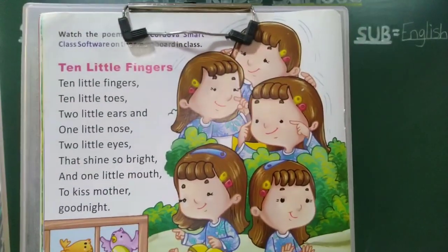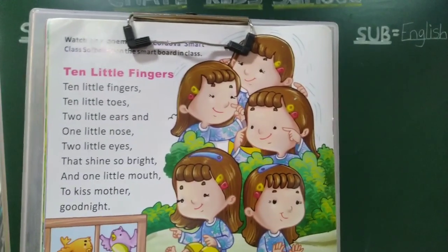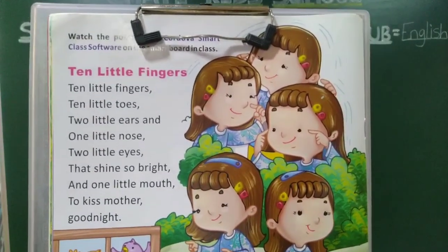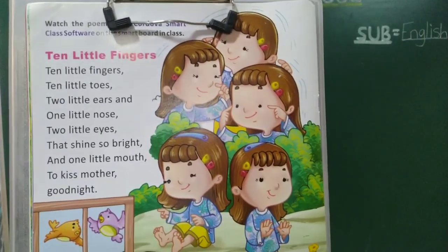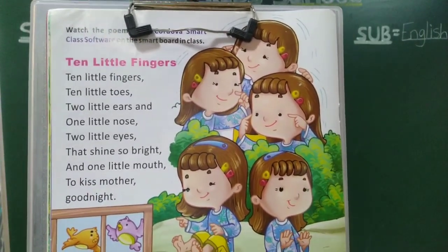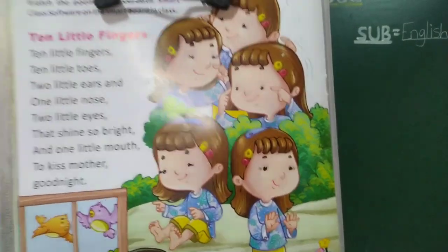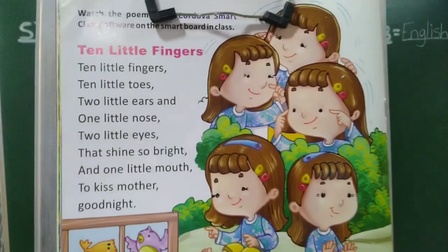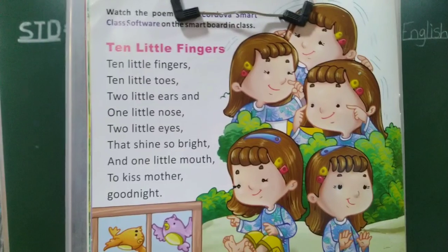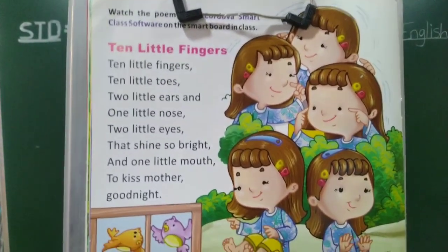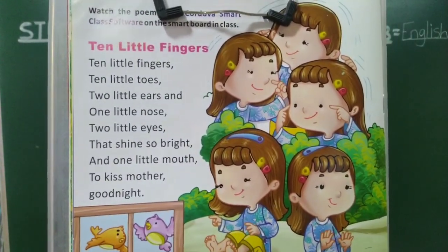Now, how many hands do you have? Two — right and left. How many fingers do you have? Five on one hand. Both left and right hands together — how many fingers do you have? Ten fingers.